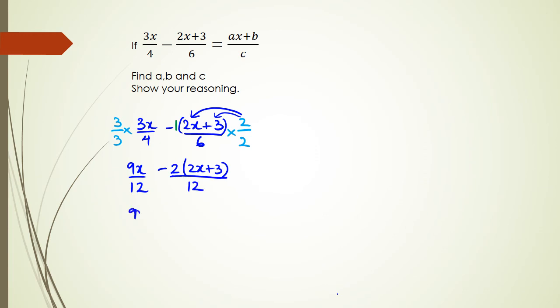And that's over 12. Now, if I expand it, I'm going to get negative 2 times 2 is negative 4x. Negative 2 times plus 3 is negative 6. And the whole thing is divided by 12. Simplifying this, I'm going to get 5x minus 6 over 12. And I can say, therefore, a is equal to 5, b equals minus 6, c equals to 12.